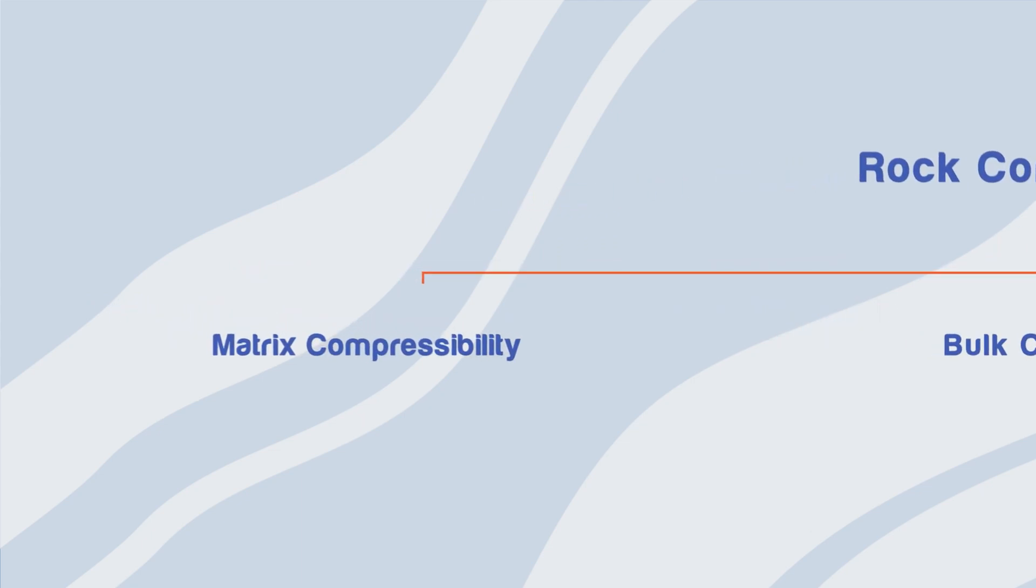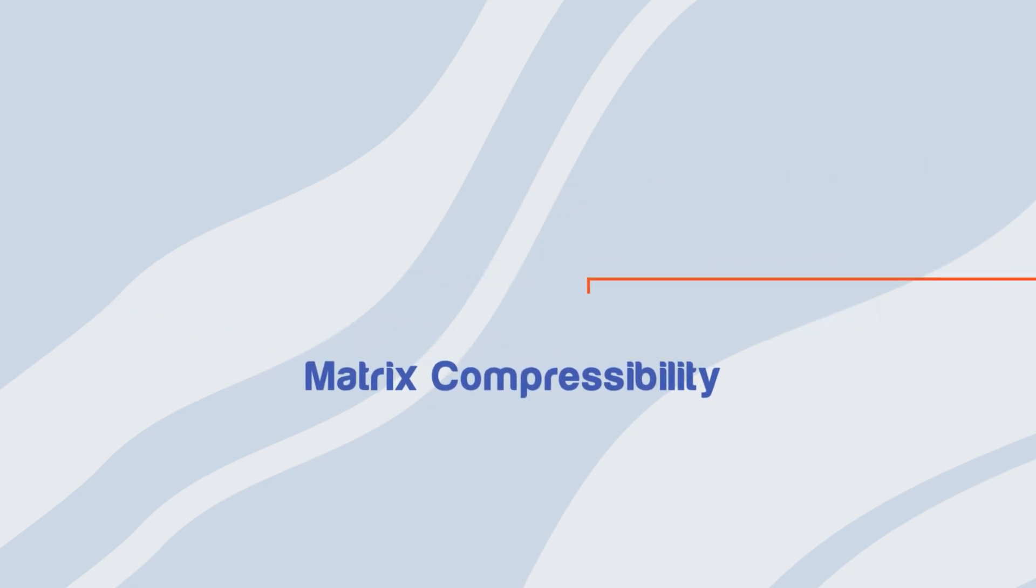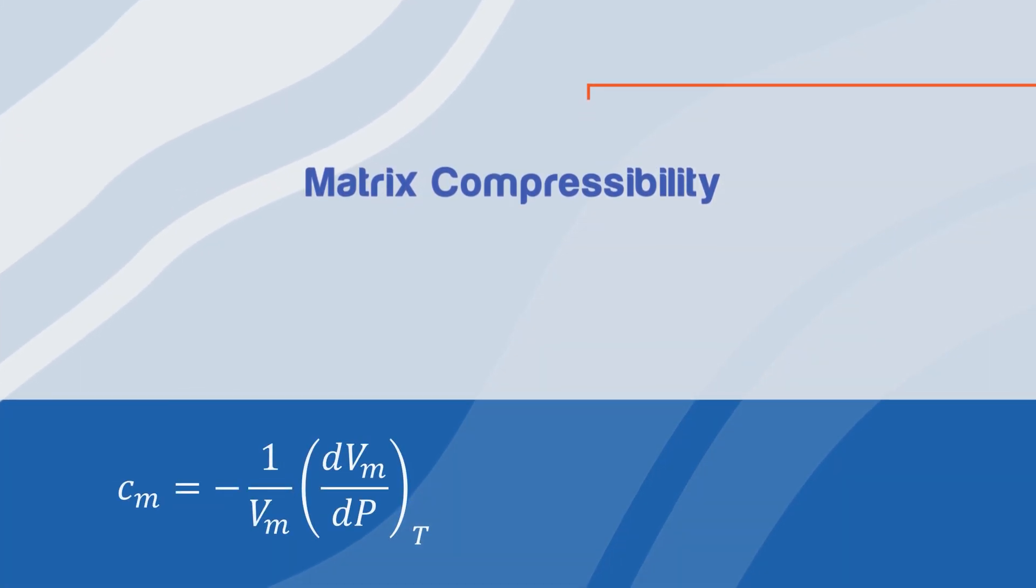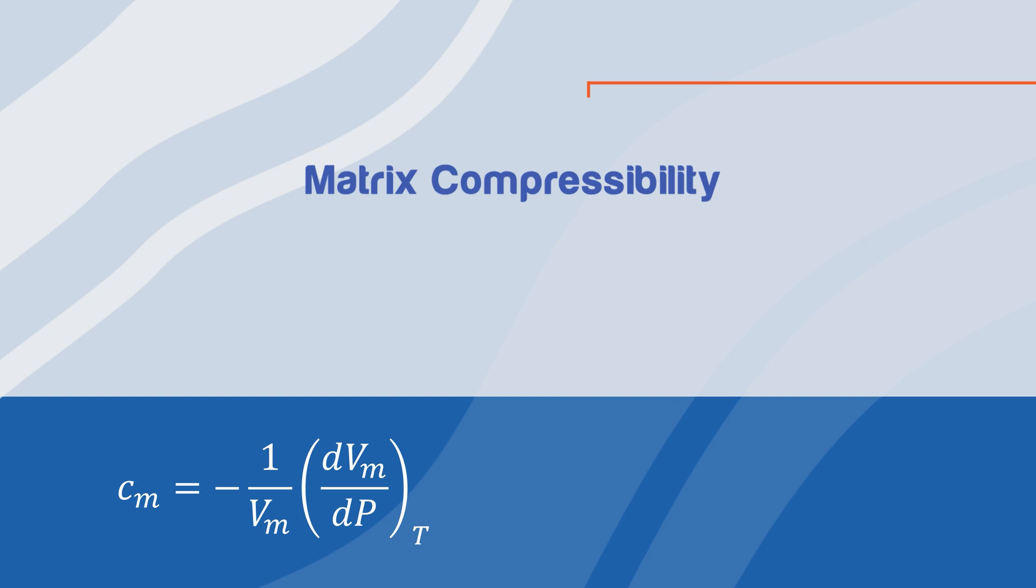Matrix compressibility is the fractional change in matrix volume per unit change in pressure. Its equation is shown here, where cm is the matrix compressibility, vm is the matrix volume, and dvm over dp is the change in matrix volume over change in pressure.